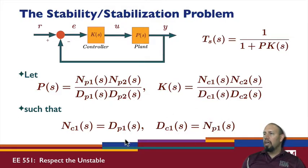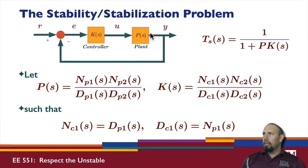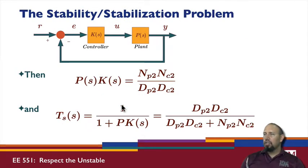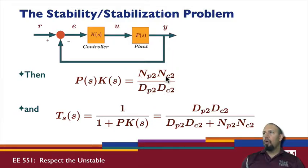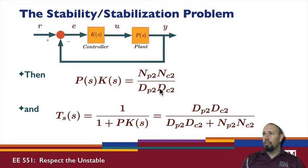We have cancellations going on, but the cancellations are stable cancellations. When we put these two in cascade as transfer functions — looking at a single-input single-output system — notice that there are no unstable pole-zero cancellations occurring. There have been cancellations, but they're stable cancellations. When we put this into our sensitivity function, we get the resulting expression.